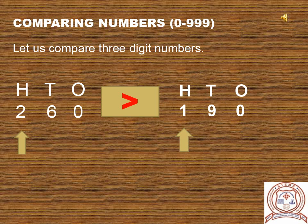Now we will see examples of comparing three-digit numbers. Let us compare 260 and 190. Start by comparing the leftmost digit, which is the hundreds place. In 260, 2 is at hundreds place, and in 190, 1 is at hundreds place. Two hundreds is greater than one hundred. That means 260 is greater than 190.